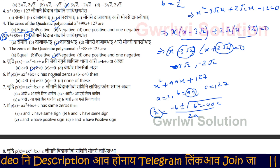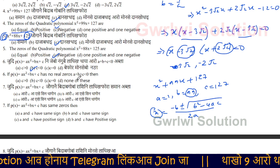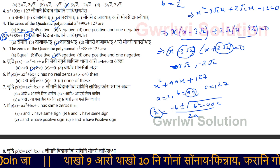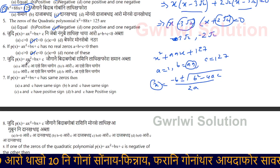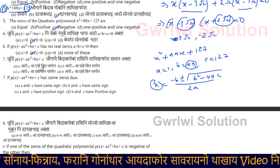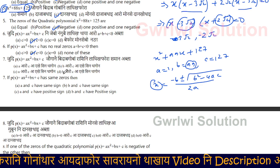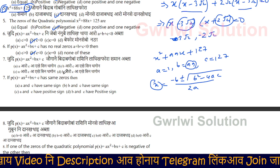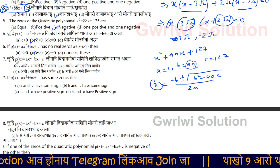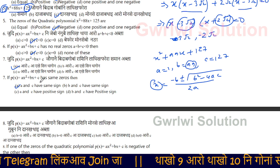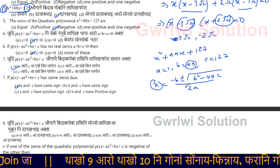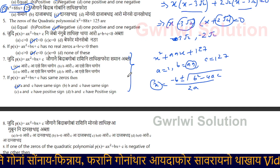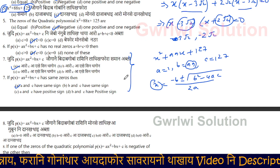If p(x) equals ax squared plus bx plus c has no real zeros, and a plus b plus c is less than 0, then option number B is correct. If p(x) equals ax squared plus bx plus c, the relation will work together.